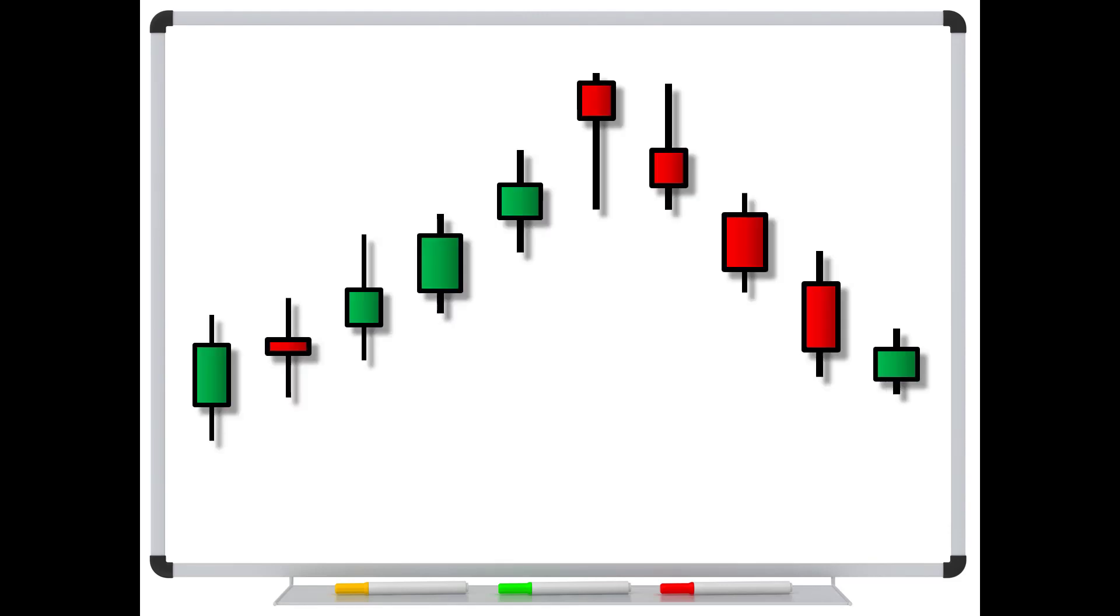So let's take a look at a detailed example and see why a hammer or a hanging man is so powerful at a top. Let's say that this is our formation going into our hammer up here or the hanging man. So the longer this trend the more powerful. You don't want to see a hanging man just occur somewhere in a sideways trend. That's not a hanging man. We want to see a long powerful extended rally. And then we get this signal.